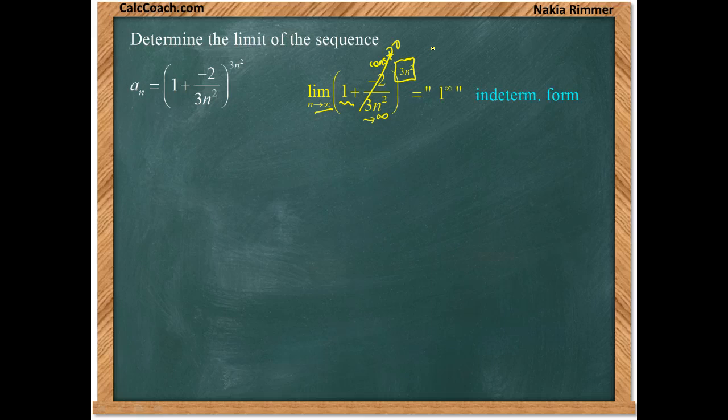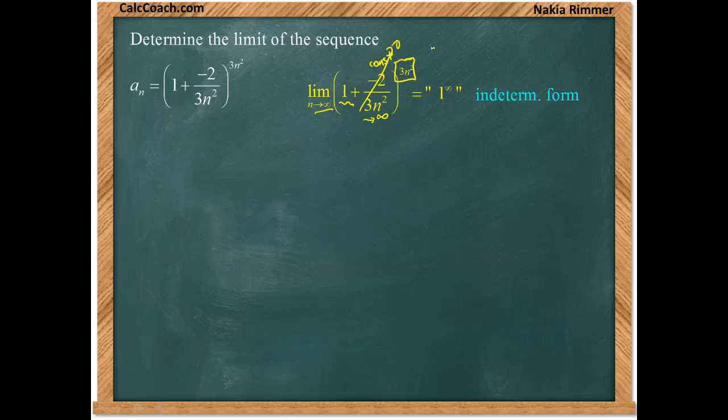This is an indeterminate form where it could be one, it could be zero, it could be any number, it could be infinite. So we can't quite use L'Hôpital's rule yet. What we need to do is transform this into a form that we can use L'Hôpital's rule on.